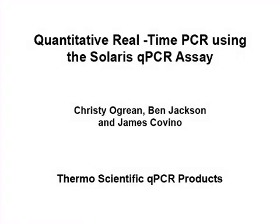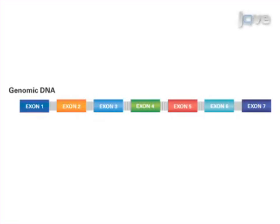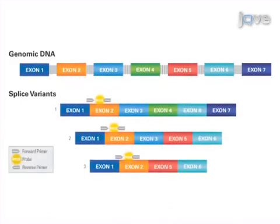In this video article, real-time PCR is demonstrated using Solaris qPCR assays. Solaris qPCR assays are gene-specific probe and primer pairs designed to detect all known splice variants of a given gene under universal thermocycling conditions.